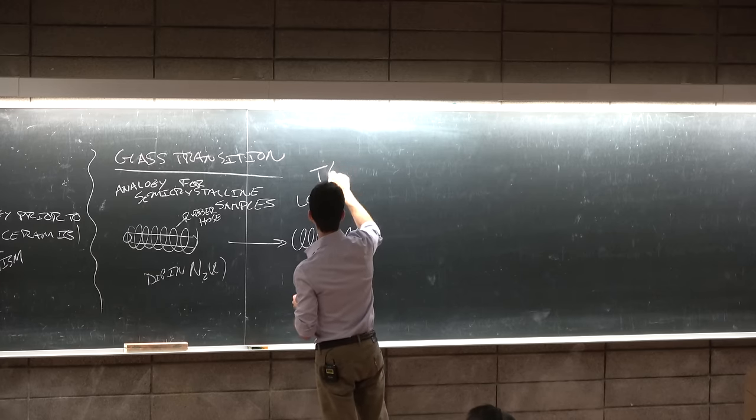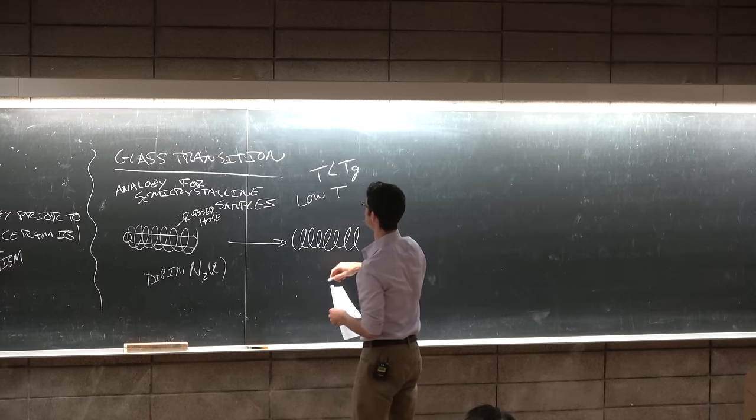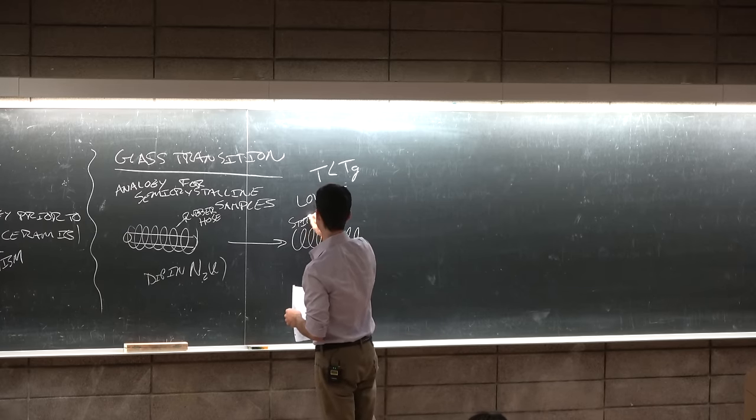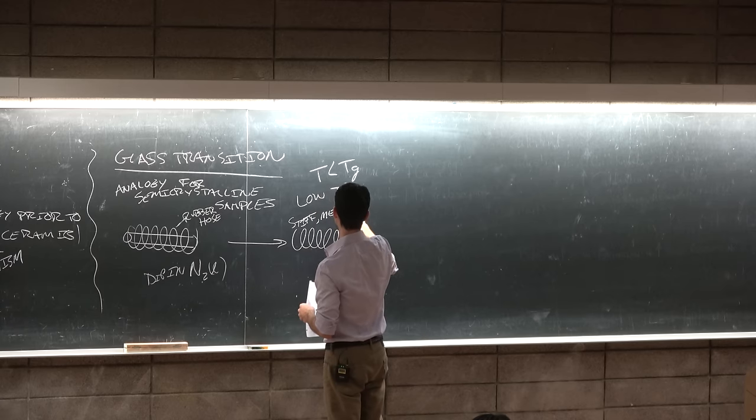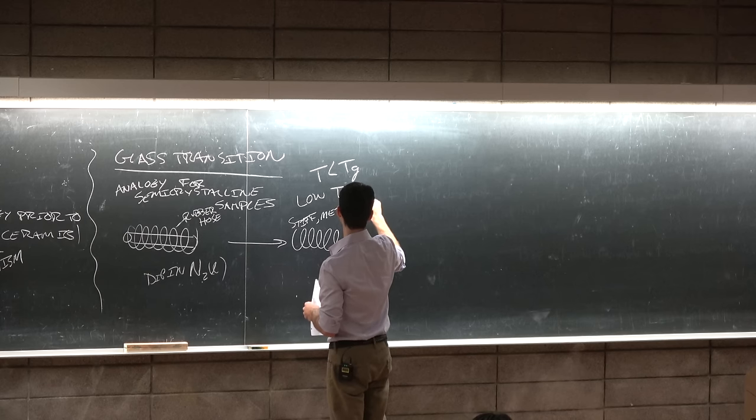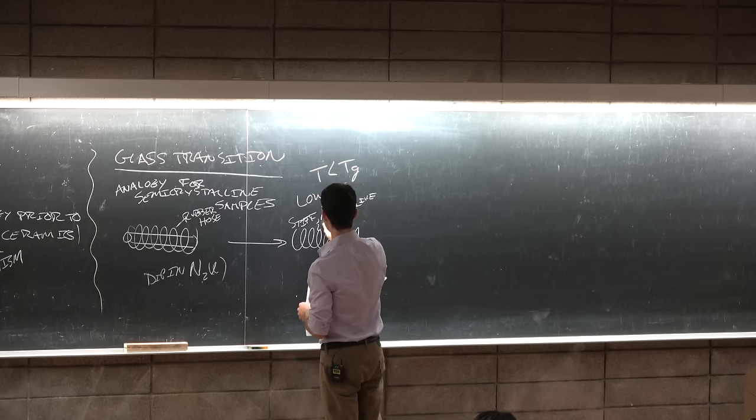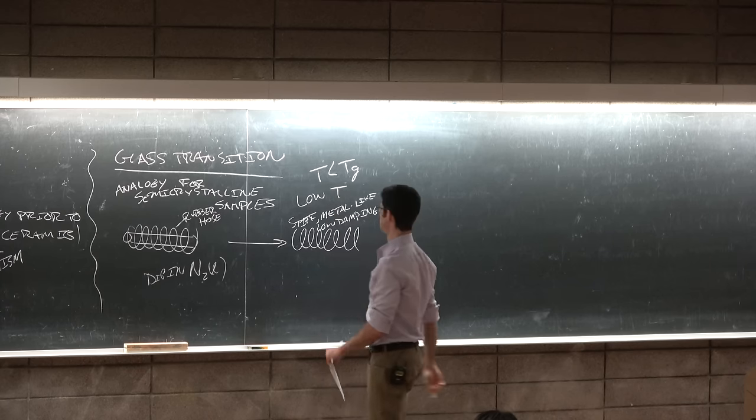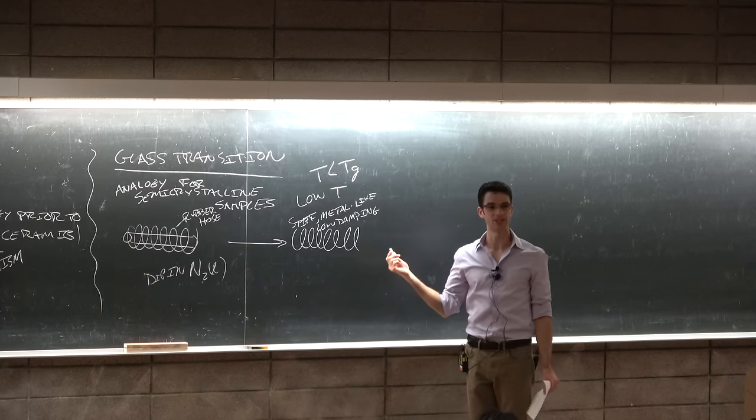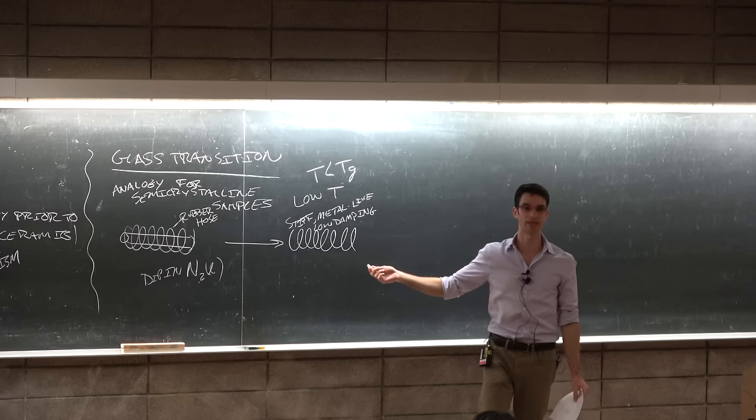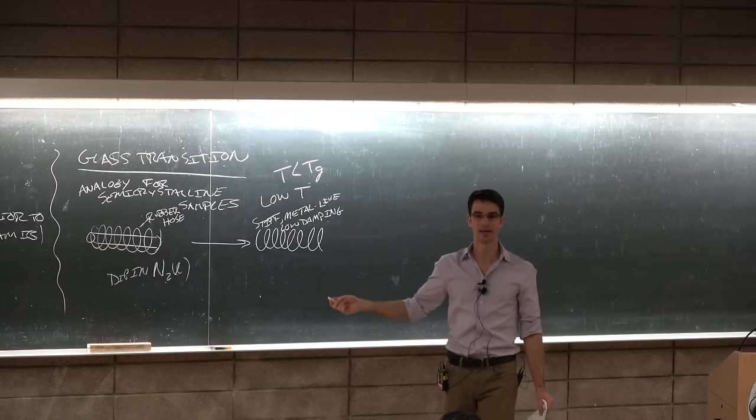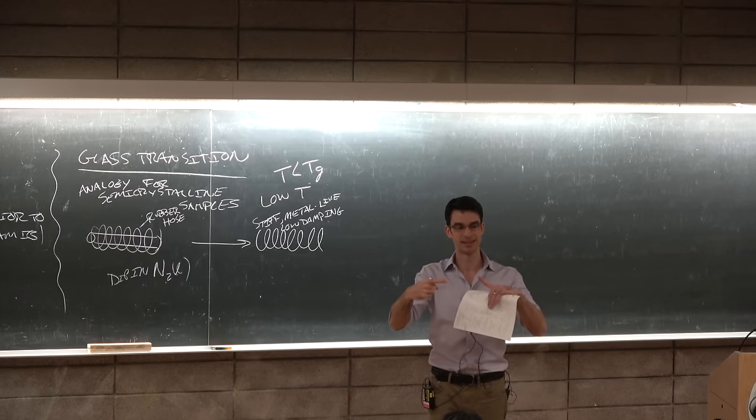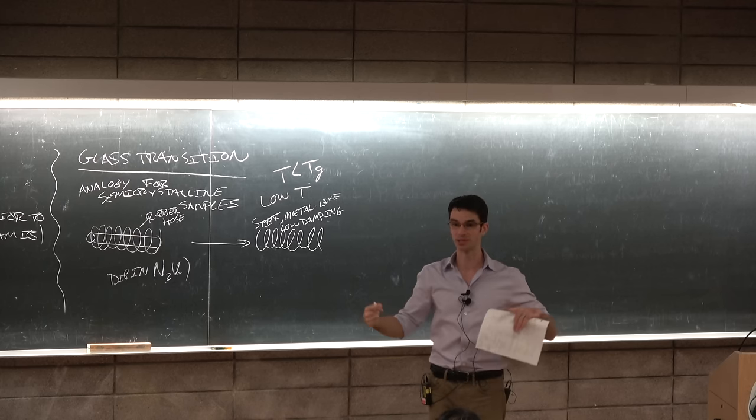So this is at low T. So this is T less than Tg. And what we have is it's stiff, metal-like, low damping. So it stores all the energy... Or it stores all the mechanical energy as opposed to dissipating the mechanical energy. There's low time dependence because as soon as you compress it, it provides a restoring force which immediately pushes back.